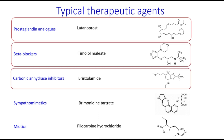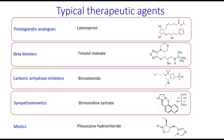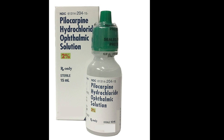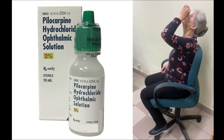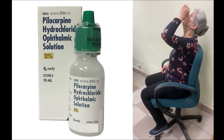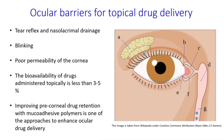carbonic anhydrase inhibitors, sympathomimetics, and miotics. Pilocarpine hydrochloride is a miotic that opens up an inefficient channel in the trabecular meshwork. Typically it is used for the treatment of angle closure glaucoma. Adult patients with this condition are recommended to apply eye drops up to four times a day to control the intraocular pressure.